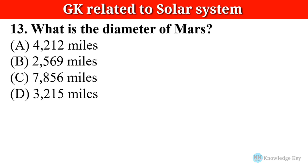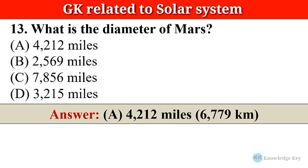Question number thirteen: What is the diameter of Mars? The correct answer is option A — 4,212 miles, which is equal to 6,779 kilometers.